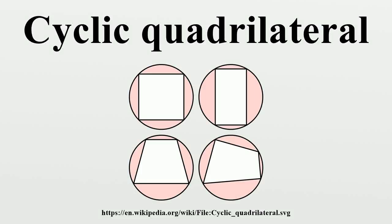In Euclidean geometry, a cyclic quadrilateral or inscribed quadrilateral is a quadrilateral whose vertices all lie on a single circle. This circle is called the circumcircle or circumscribed circle, and the vertices are said to be concyclic. The center of the circle and its radius are called the circumcenter and the circumradius respectively. Other names for these quadrilaterals are concyclic quadrilateral and chordal quadrilateral, the latter since the sides of the quadrilateral are chords of the circumcircle.